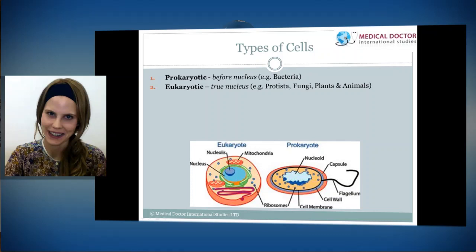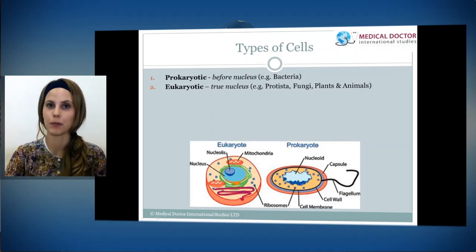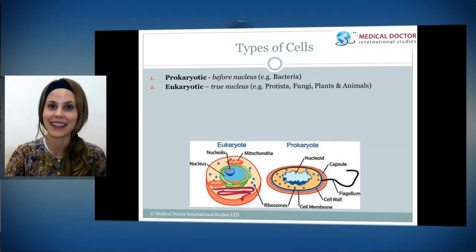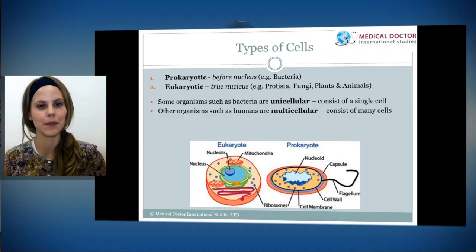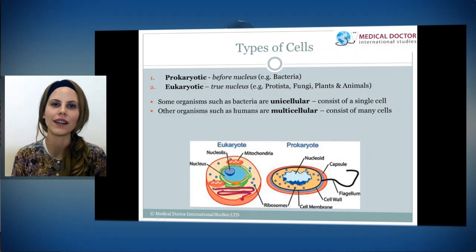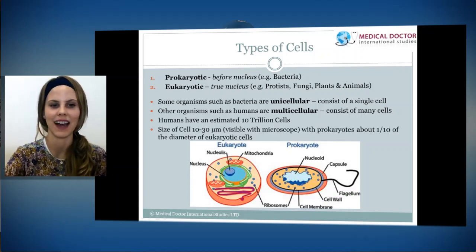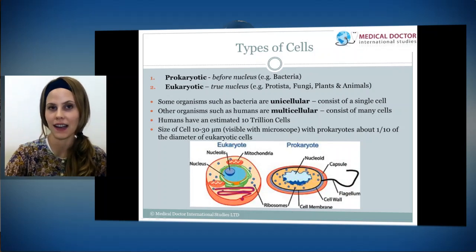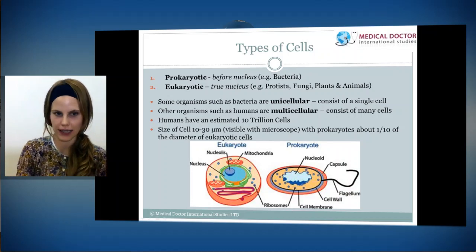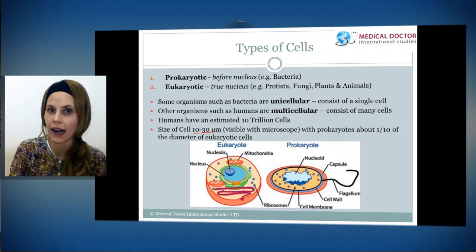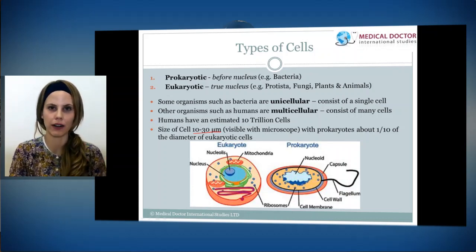If I was to ask you what kind of cells we can find in our body, the correct answer is both eukaryotes and prokaryotes. Why? Well, just a fun fact — we have trillions of bacteria living in our gut, helping us to digest and absorb certain foods. Some organisms, such as bacteria, are unicellular, meaning they're composed of only one cell. They're not multicellular, which is composed of many cells like human beings. Humans actually have an estimated 10 trillion cells in our body. The size of a cell is usually between 10 to 30 micrometers, and it can only be visible under a microscope. Prokaryotes are actually one-tenth the diameter size of a eukaryote, so they're much smaller.